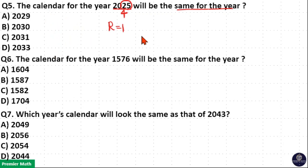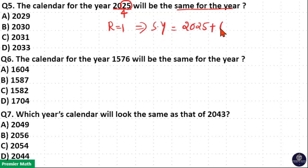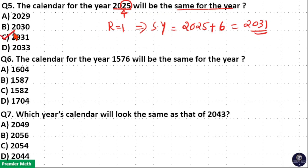Since the remainder is 1, the same calendar year equals 2025 plus 6, which is 2031. When the remainder is 1, add 6 to the given year. So 2031 is the same calendar year as 2025. Option C is your answer.